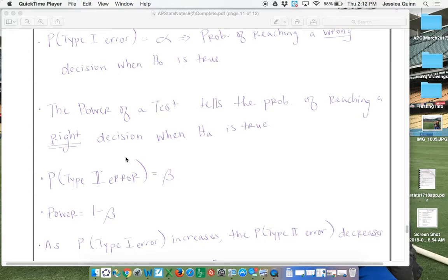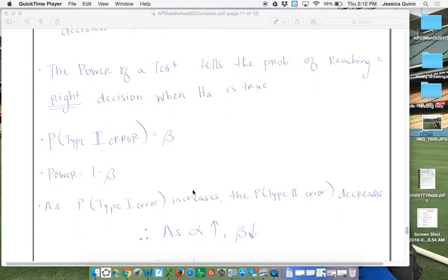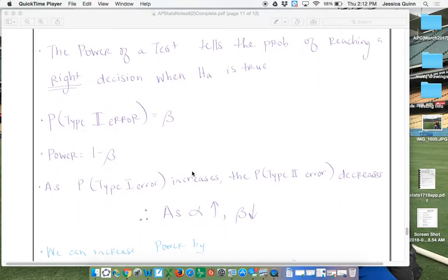So we want the power of a test to be high because we want the probability to be high that we get things right. So the probability of making a type 2 error has its own Greek symbol, so it uses beta, and the power of a test is 1 minus beta.